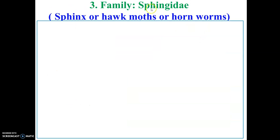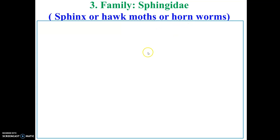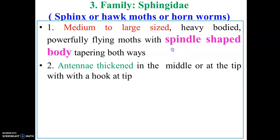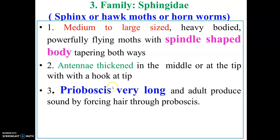The next family is Sphingidae, also a very special family. The common name is sphinx moth, hawk moth, or horn moth. These are medium to large-sized insects. A very special and important character is that the body is spindle-shaped, tapering on both the anterior and posterior sides. Another important character is that the proboscis is very, very long.